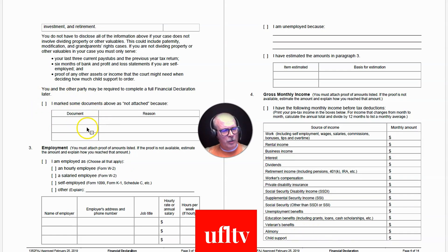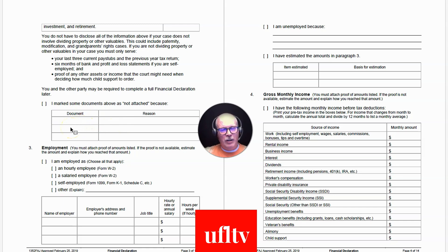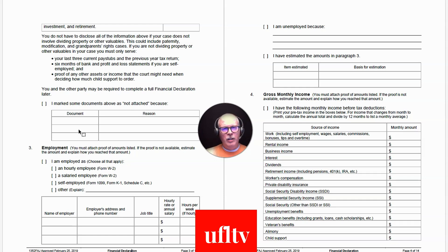On the next page, there's a checkbox: 'I marked some documents above as not attached.' If you don't have tax returns because your spouse won't provide them, they were lost, or you haven't filed taxes, this is where you explain why. Don't think you can claim you don't have pay stubs so no one will know your income — your spouse could subpoena your employer for them. You'll be made to get any documents that are accessible or available to you, even if not currently in your possession.